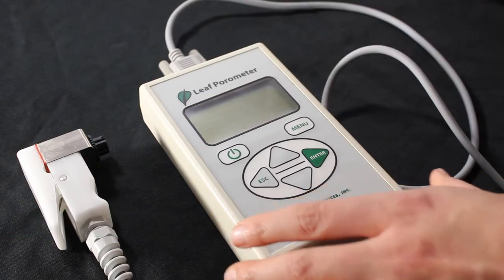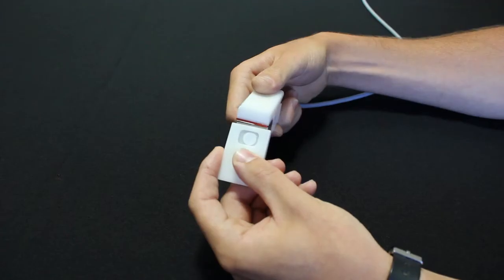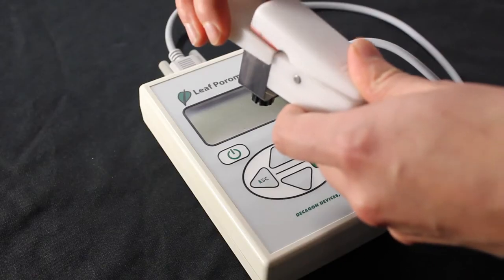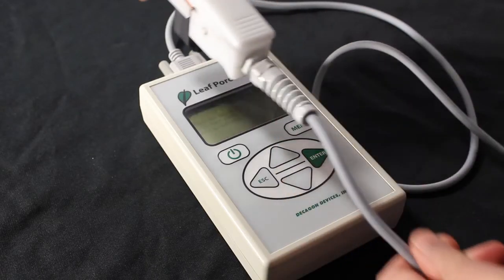You will be prompted to place the sensor head onto the calibration plate. It is important that the head be placed over the calibration plate quickly, as seen here. Be sure to seat the sensor head firmly against the hard stop on the calibration plate, like so.